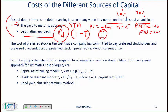The cost of preferred stock is the cost that a company has committed to pay preferred stockholders as preferred dividends. The formula is: cost of preferred stock = annual dividend divided by the current stock price — not the par value, not the old stock price, the current stock price.